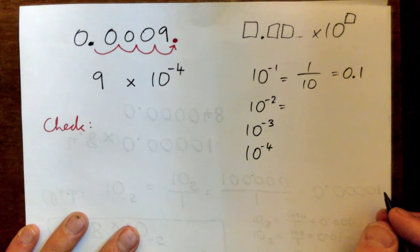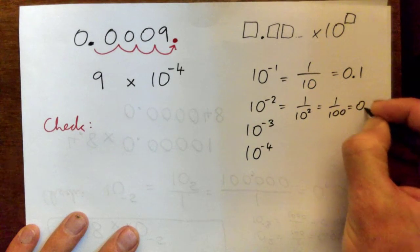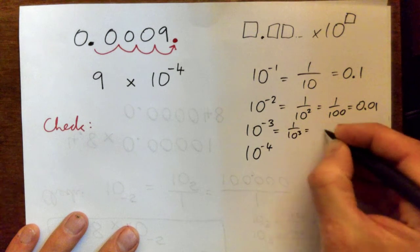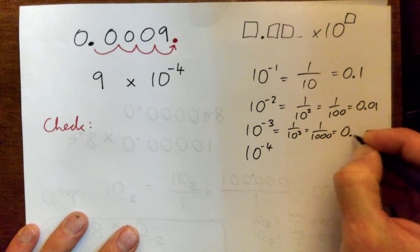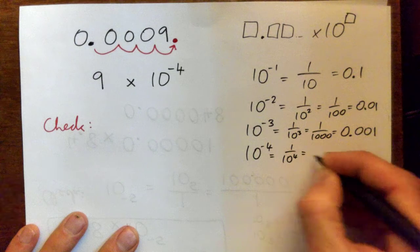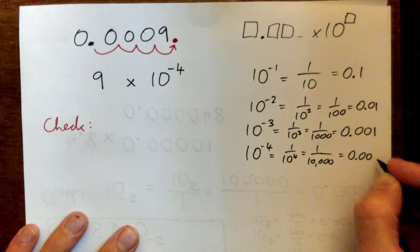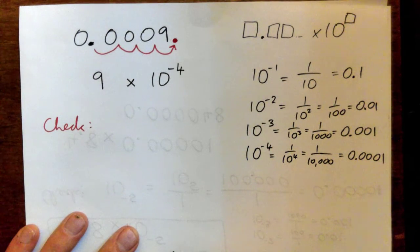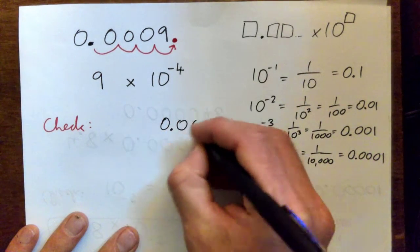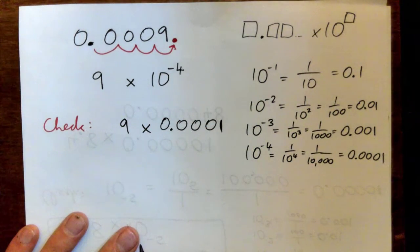10 to the negative 2 is 1 over 10 squared, or one-hundredth, which is 0.01. 10 to the negative 3 is 1 over 10 cubed, a thousandth, or 0.001. And 10 to the negative 4 is 1 over 10 to the power of 4, one ten-thousandth, or 0.0001.